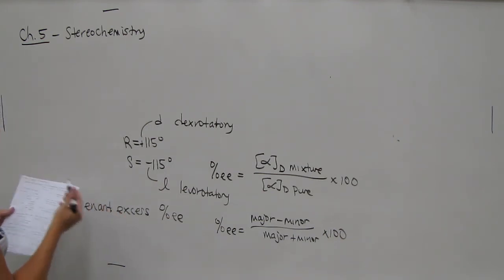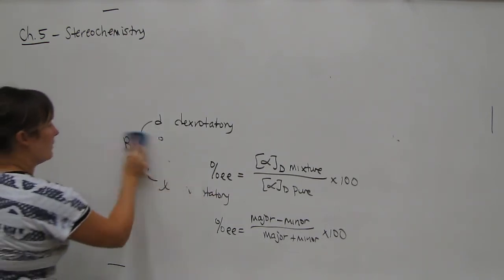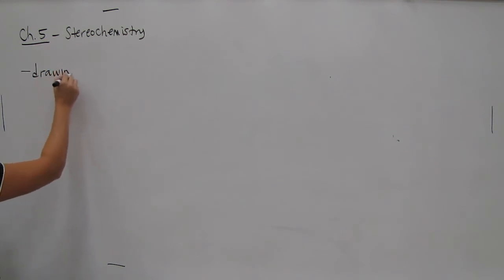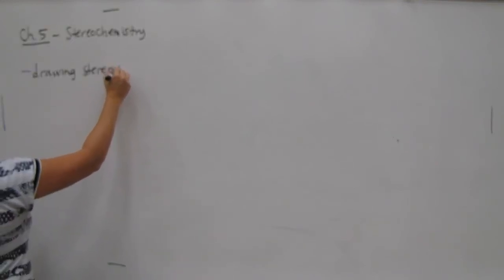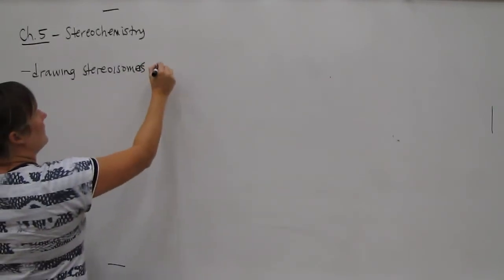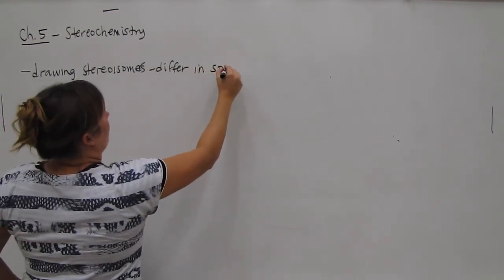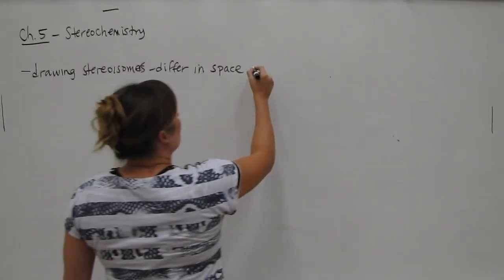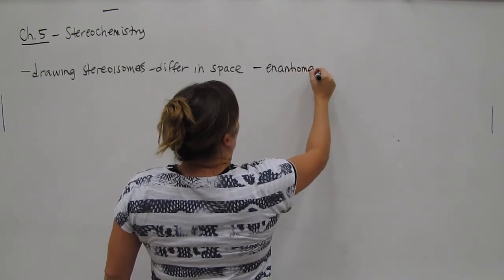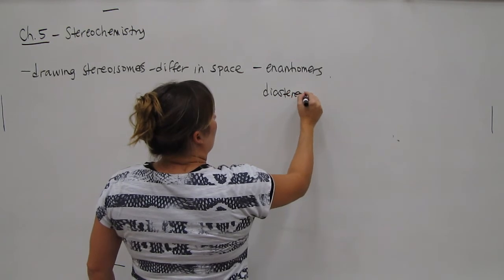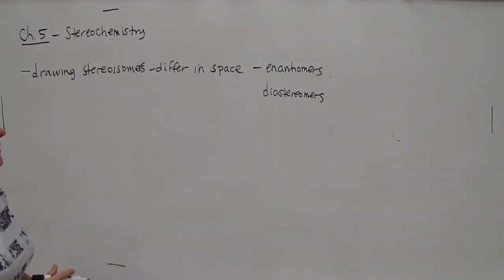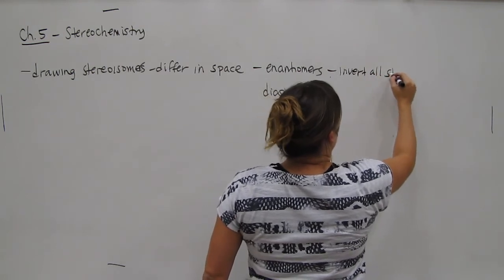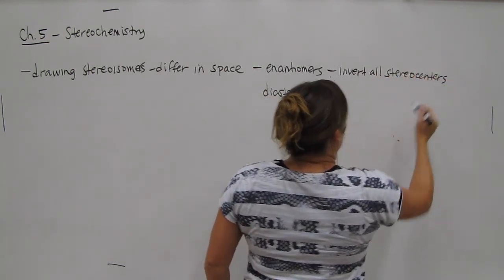So after the specific rotation, we talked about drawing stereoisomers. And stereoisomers were isomers that differ in space. And we had two types of stereoisomers that we learned, and they were enantiomers and diastereomers. In enantiomers, to draw enantiomers, you invert all chiral carbons or stereocenters. For instance, if both were R, you would convert both to S.